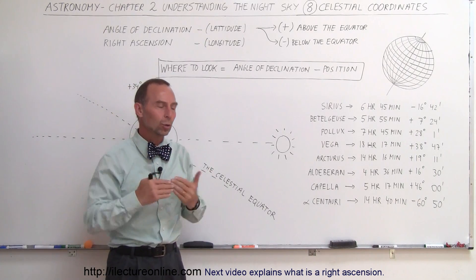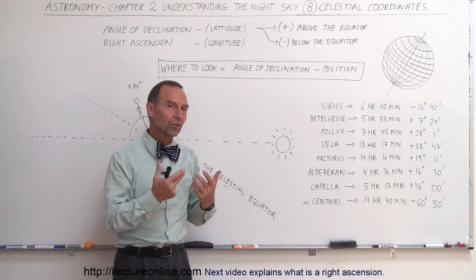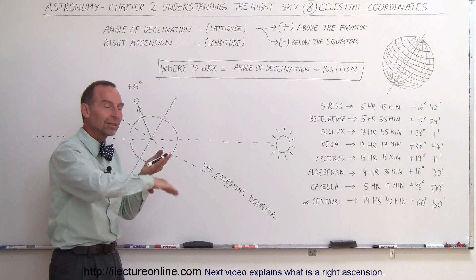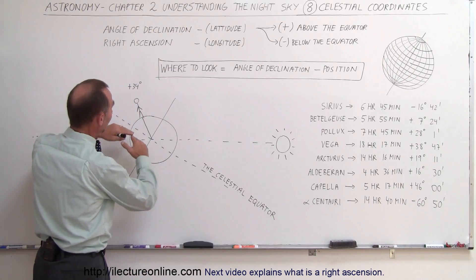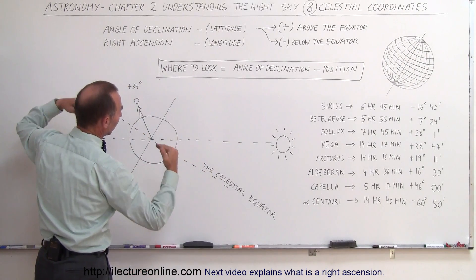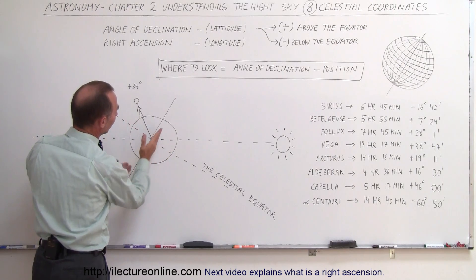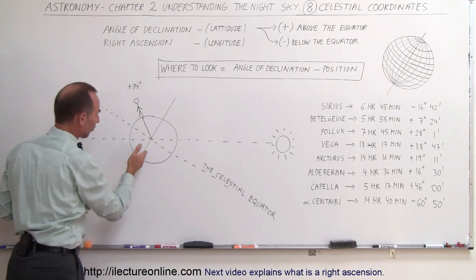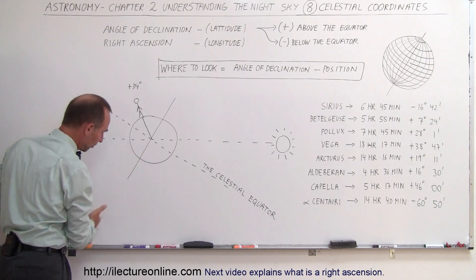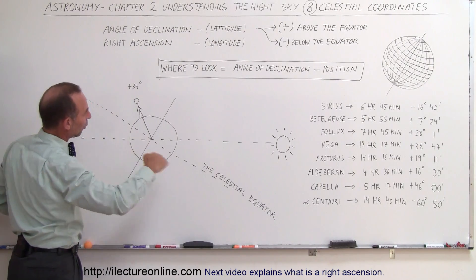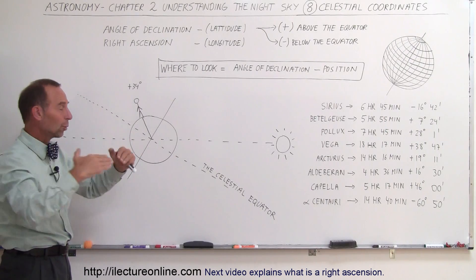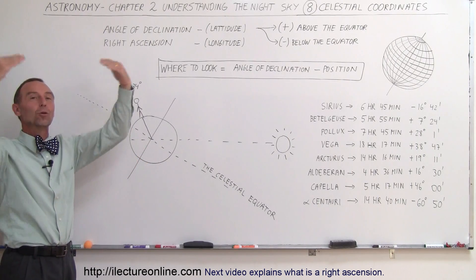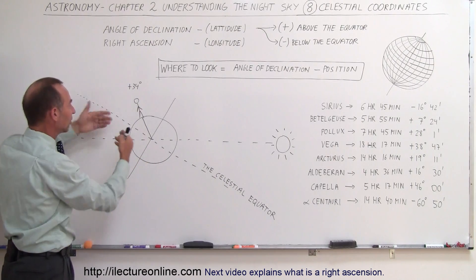Declination is the height above or below the equator in terms of degrees — anywhere from 0 to 90 degrees above or below the equator. Just like the celestial sphere is in sync with Earth's coordinate system: the North Pole is directly below the celestial north pole, the south pole below the celestial south pole, and the plane through Earth's equator is called the celestial equator, which divides the universe into northern and southern halves relative to Earth.